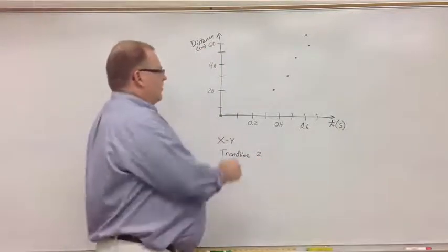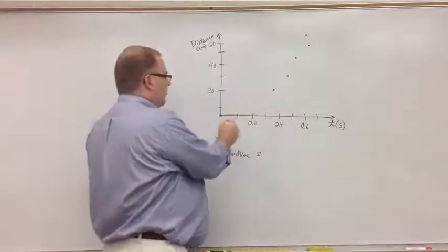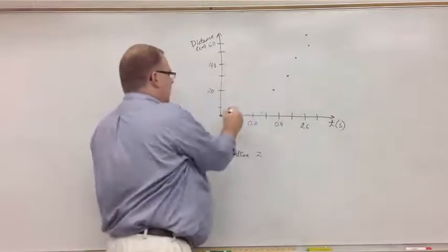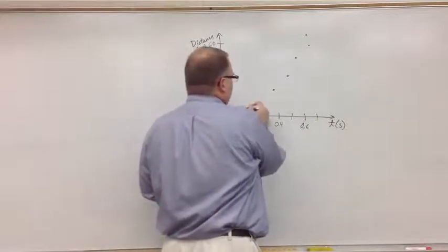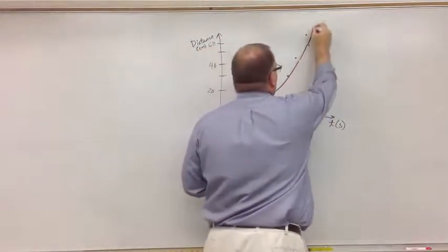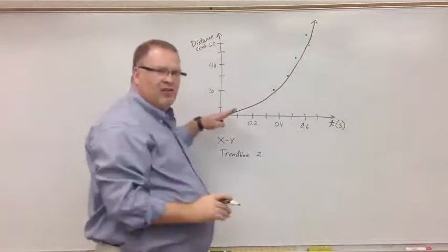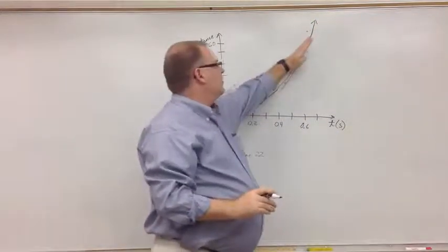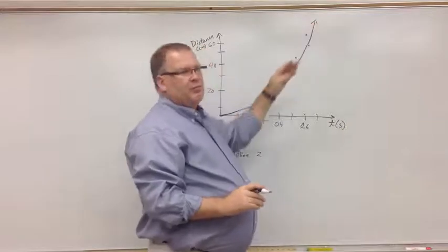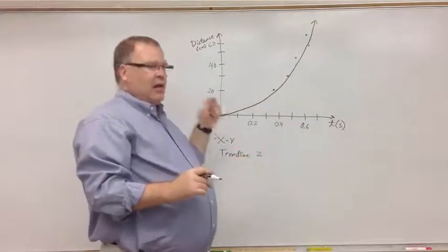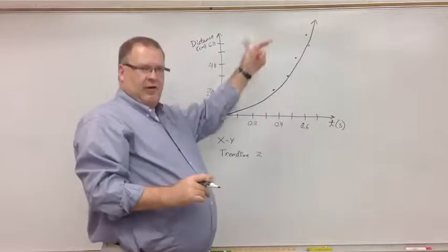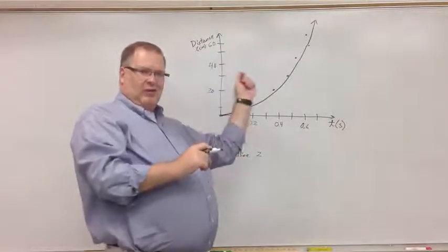Because what this is, is this is parabolic in shape. It's like the right side of a parabola because the best fit curve for my data is a smooth line that gets as close to my data as possible. This is probably about as close as I can get free handing it. I would probably, if I had pencil, erase it again, maybe even try a little bit better.